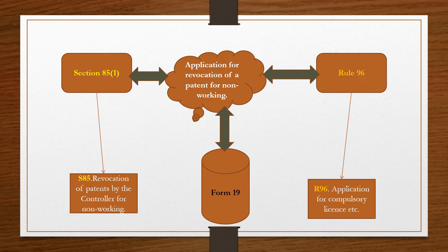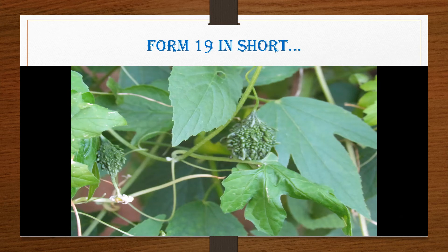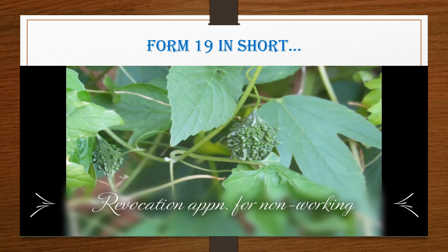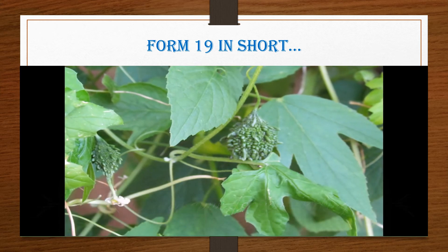This way form 19 is completed. In short, form 19 is a Revocation Application for Non-Working. That means an application for revocation is made because the patent is non-working. Just remember these things and we will proceed further.